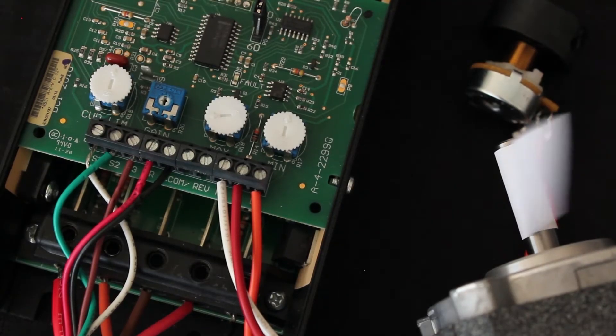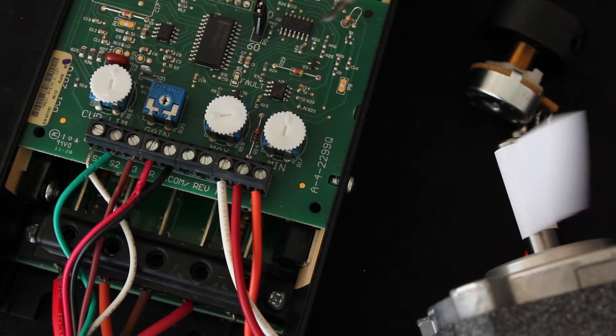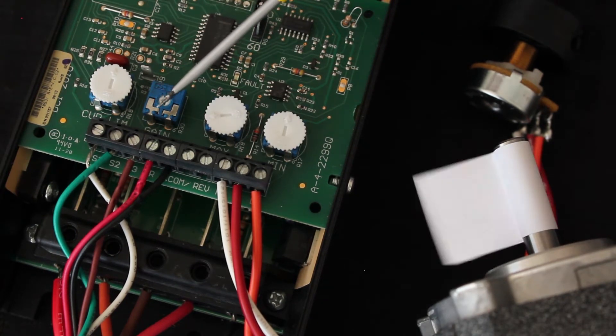In order to change the gain on your control, you need to locate the min, max, and closed-loop gain trim pots.